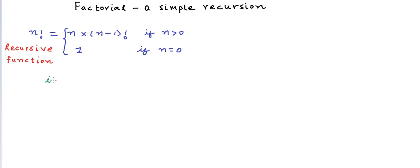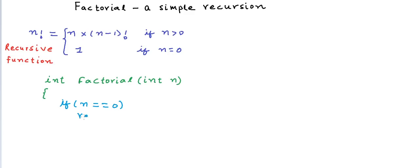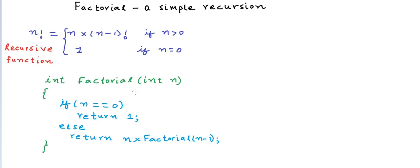Let's say we write a function that returns an integer and the name of the function is factorial. It takes an integer as input, so we say int n is the input, and the function goes like: if n is equal to 0, simply return 1; else return n into factorial(n-1). Now we can see that within the function factorial, we are calling the method itself though with a reduced argument. When we call a method within itself, we say that such a call is a recursive call.